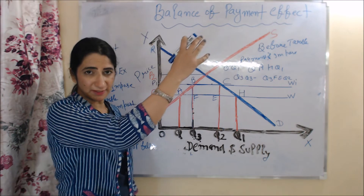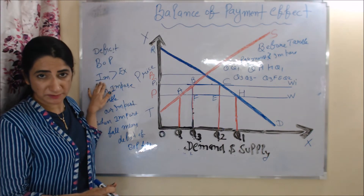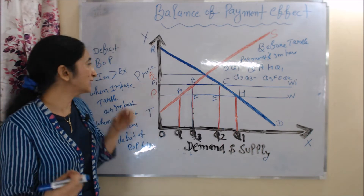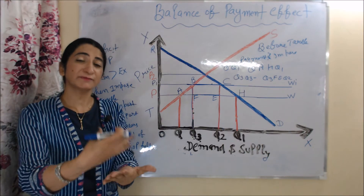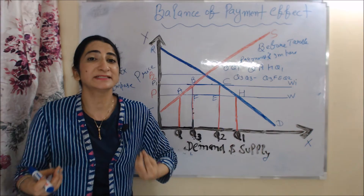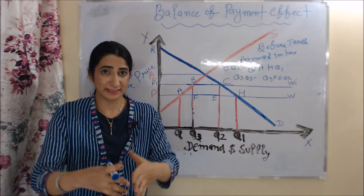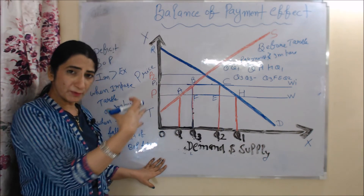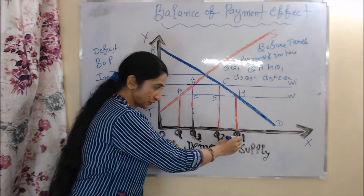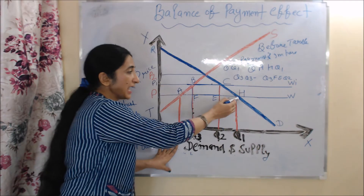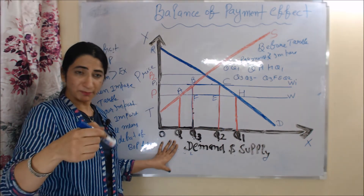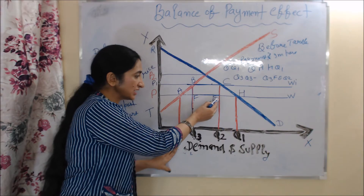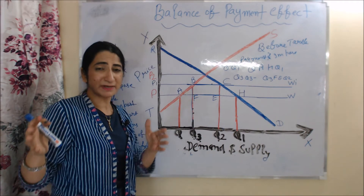The last effect of tariff is called the balance of payment effect. As we know, if our import is more than our export, we have a deficit balance of payment. When we impose tariff, our import falls. If import falls, the deficit of balance of payment falls. Before imposing tariff, our import was Q1 and the payment of import was QAHQ1. But after imposing tariff, import falls — now we have only Q3Q2 import and the net payment for import is Q3HEQ2, which is much less than before.